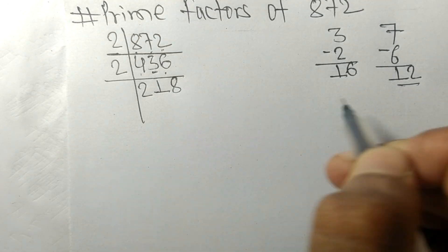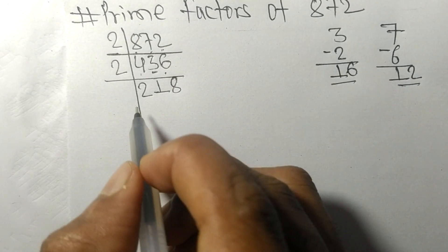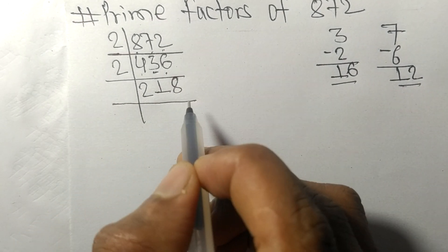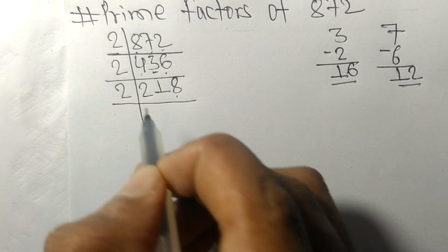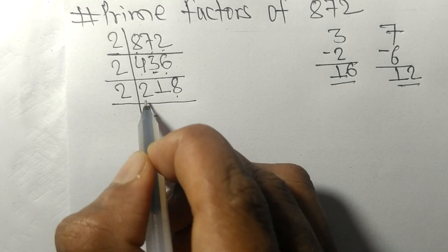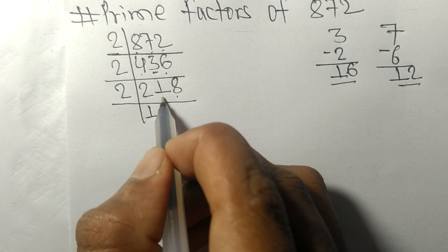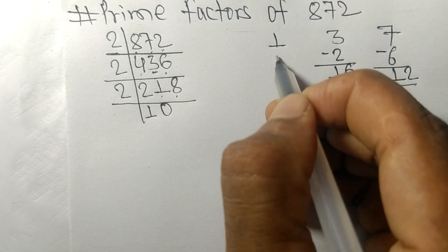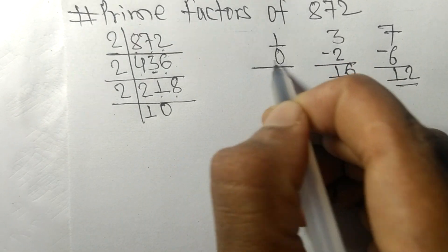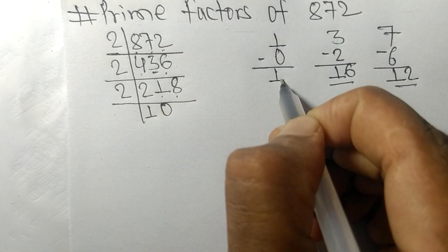2 times 8 is 16. Again we have an even number 8 at last, so it is divisible by 2. 2 times 1 is 2. Now we have 1, so 2 times 0 is 0. On subtracting we get 1.